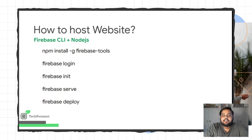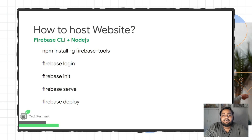You can deploy your website in a few steps. First, you need to install Node.js. After that, you have to run a command for installing Firebase CLI: npm install -g firebase-tools. Then you need to log in with your Firebase account, so you need to type the Firebase login command. After authenticating, you can initiate your project with Firebase init. To locally serve, you can run Firebase serve, and for deployment, you can run Firebase deploy.